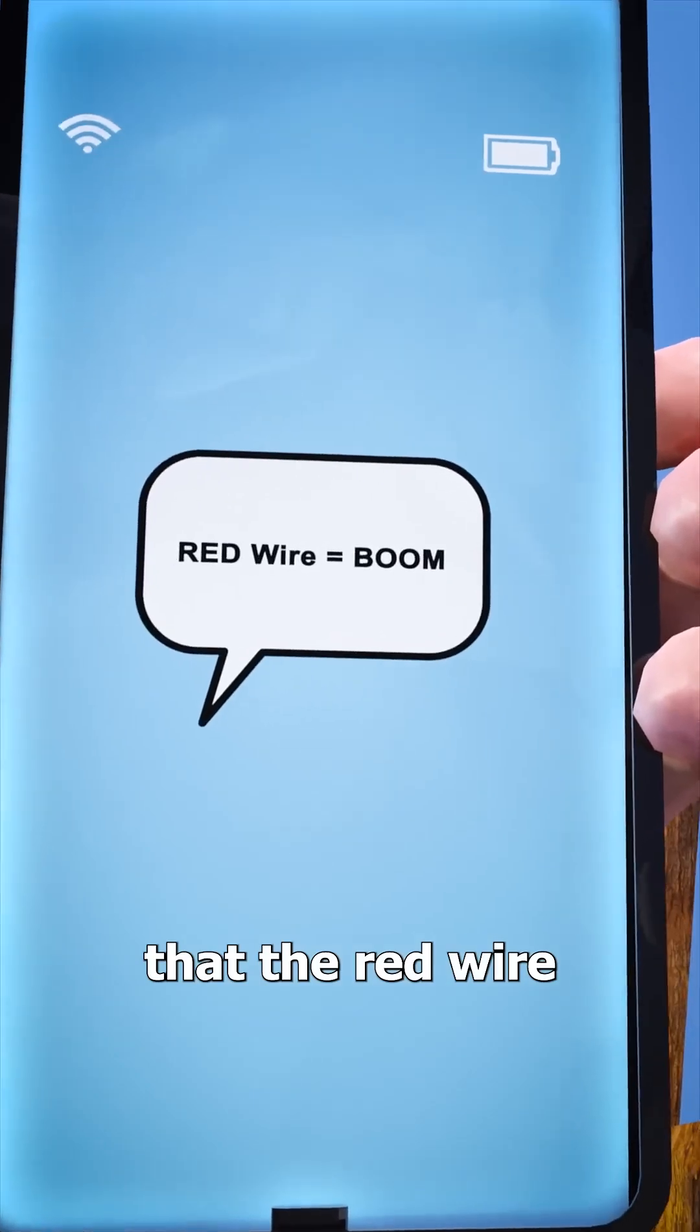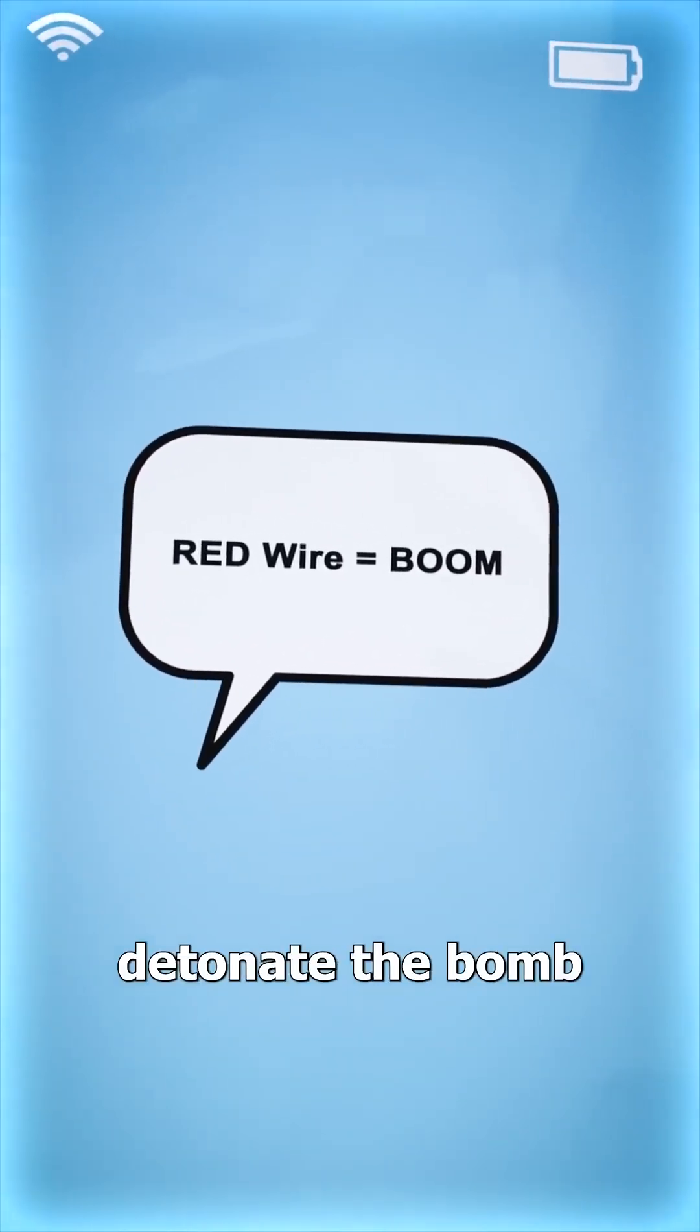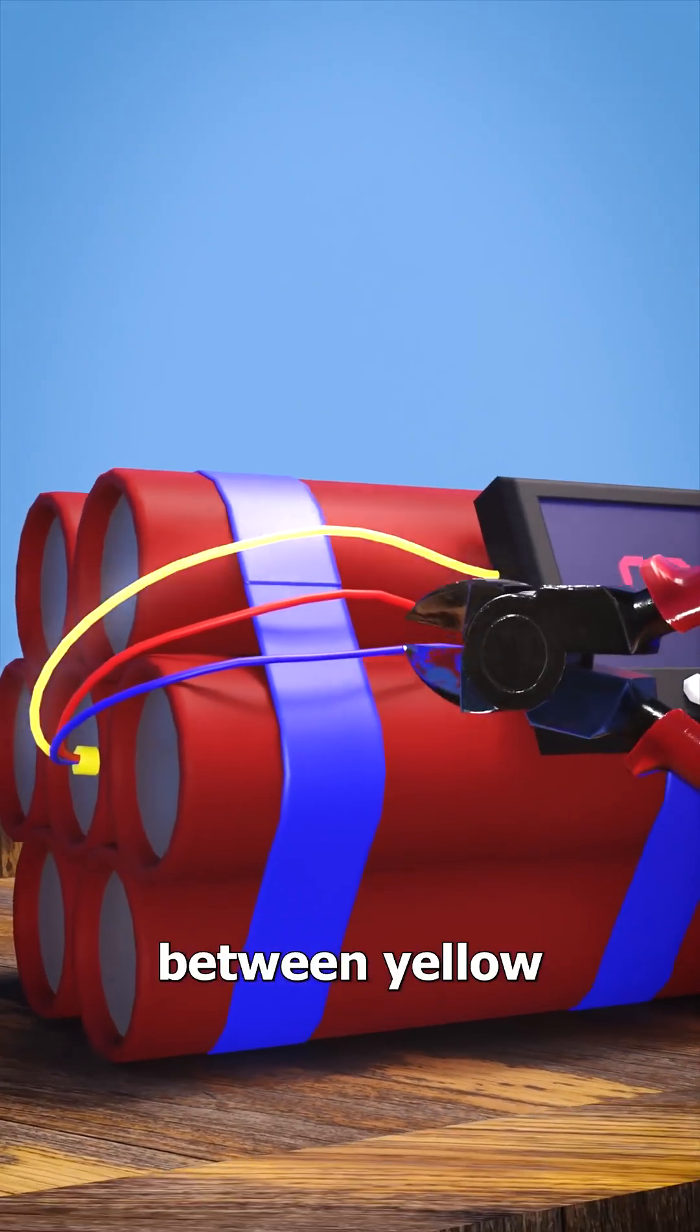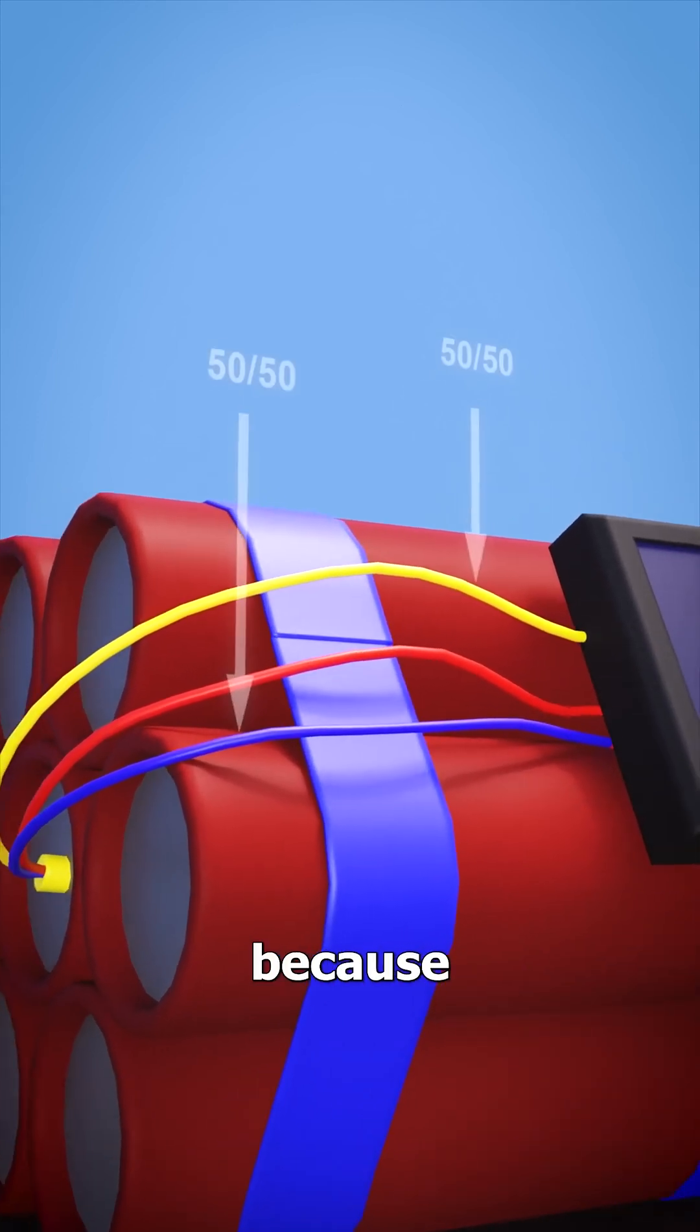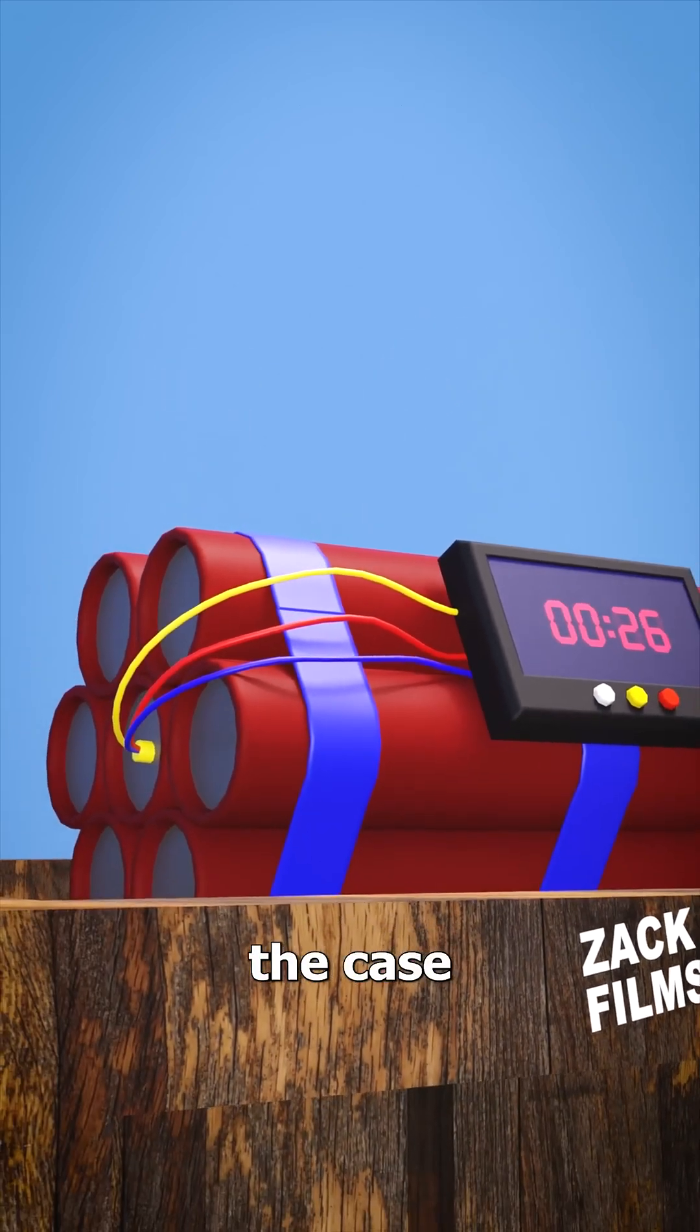He informs you that the red wire would detonate the bomb. So now you must choose between yellow or blue. And you might assume that it doesn't matter because it's 50-50, but that's not actually the case.